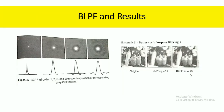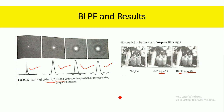Here is the Butterworth low pass filter when the order is increasing from 1, 2, 5, and 20 respectively, and the filter response will be like this. If the filter order or the cutoff frequency range increases, then the image gets more blurred. For example, at R0 equal to 10, this is the image we get. At R0 equal to 13, the image gets more blurred. So this is about the Butterworth low pass filter.